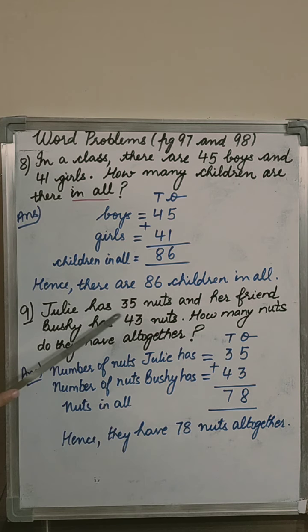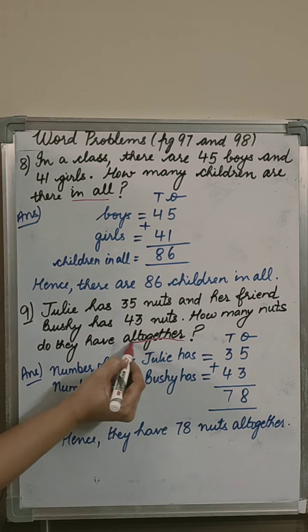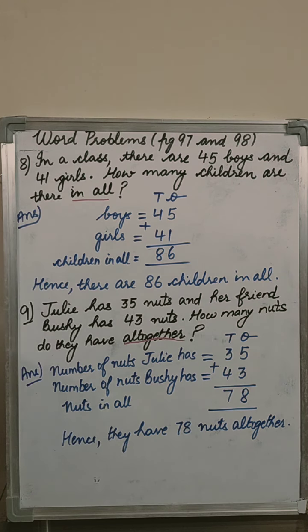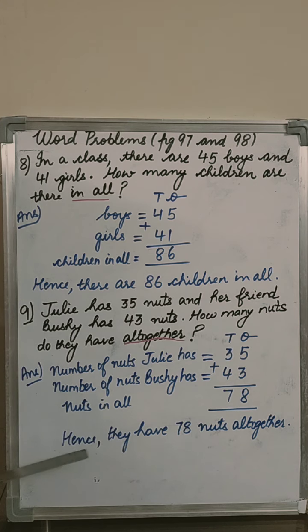Next question. Julie has 35 nuts and her friend Bushi has 43 nuts. How many nuts do they have altogether? The keyword is altogether. Altogether means plus. Number of nuts Julie has 35, number of nuts Bushi has 43, nuts in all. Ones column, 5 plus 3, 8. Tens column, 3 plus 4, 7. Hence, they have 78 nuts altogether.